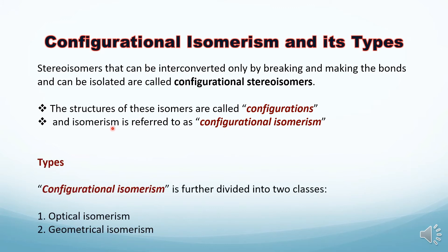We have two types of configurational isomerism. The first type is optical isomerism, which will be the topic of my next lecture, and the second type of configurational isomerism is geometrical isomerism.